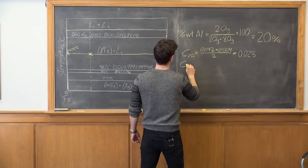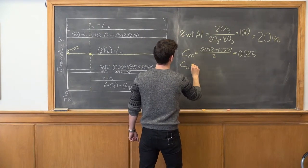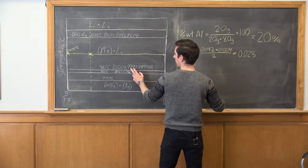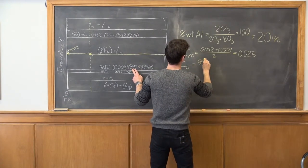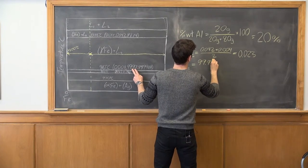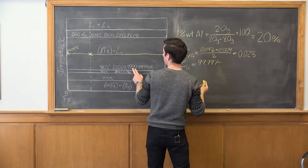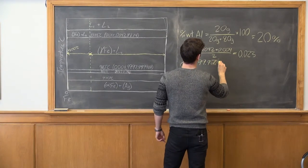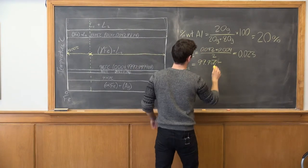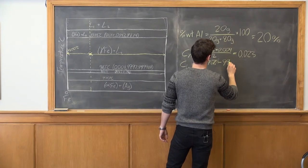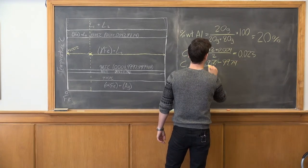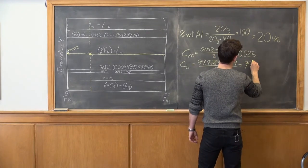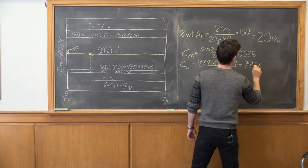Now our composition of liquid 2, L2, this is going to equal 99.97 minus 99.74 over 2, and this is equal to 99.86.